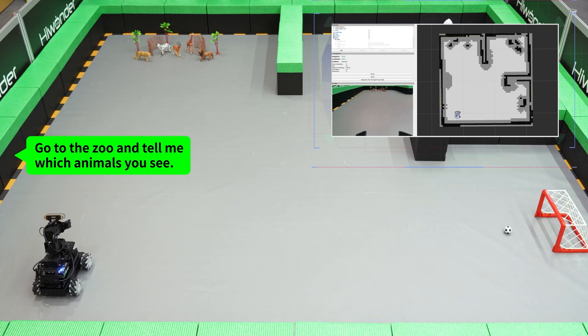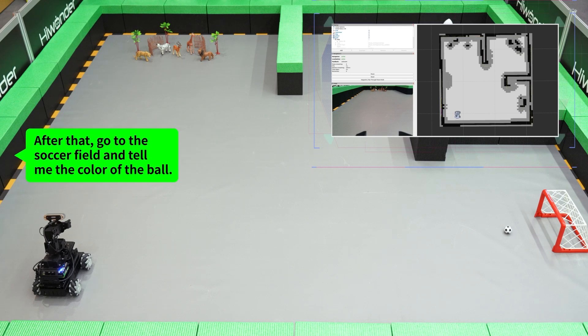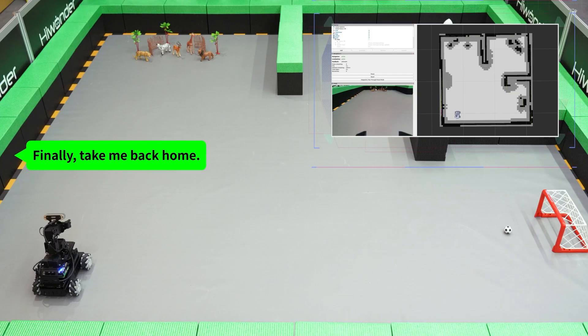Go to the zoo and tell me which animals you see, then head to the space base and let me know what objects you find there. After that, go to the soccer field and tell me the color of the ball. Finally, take me back home. Adventure awaits.